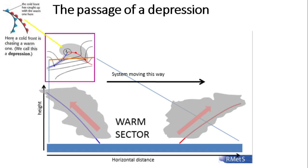Now we're going to look at the passage of a depression - putting those symbols together as we saw on the weather map and thinking about how weather conditions change as this whole system passes across the British Isles. The warm front is less steep than the cold front, and that makes a difference in terms of the height of clouds and the amount of rainfall that forms. We've got cool air ahead, the warm sector in the middle, and then cold air as the cold air mass pushes in. On a weather chart, the black lines are isobars joining points of equal air pressure.